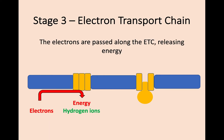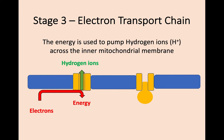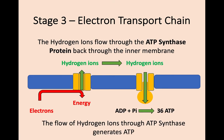As these electrons move along the chain, energy is released. That energy is used to pump the hydrogen ions across the inner mitochondrial membrane, from the matrix into the intermembrane space. These hydrogen ions then flow back through a protein called ATP synthase, back into the matrix. By flowing through this ATP synthase protein, 36 molecules of ATP are generated — by far the most ATP produced in respiration. The enzyme responsible for generating this ATP is ATP synthase.